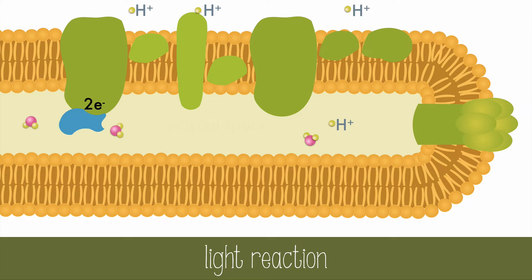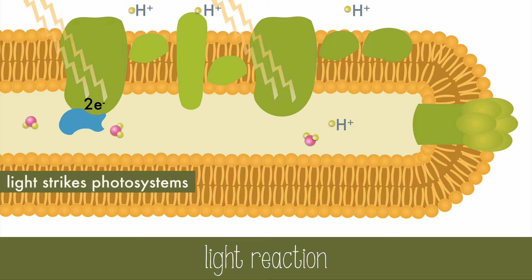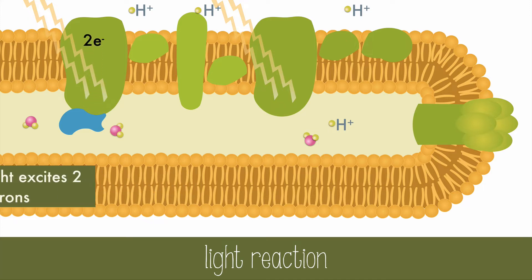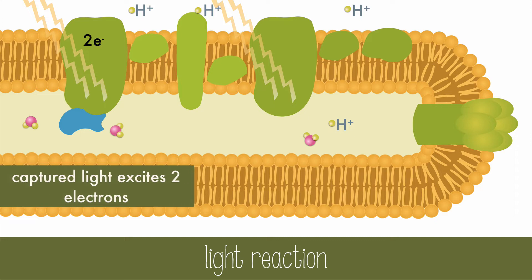Light strikes photosystems, which are clusters of chlorophyll and other light-harvesting pigments. When light excites electrons in the chlorophyll of the photosystem, the chlorophyll is photoactivated. There are two photosystems in the membrane, but they were discovered out of order — Photosystem II is actually the first to be activated in the light reaction.